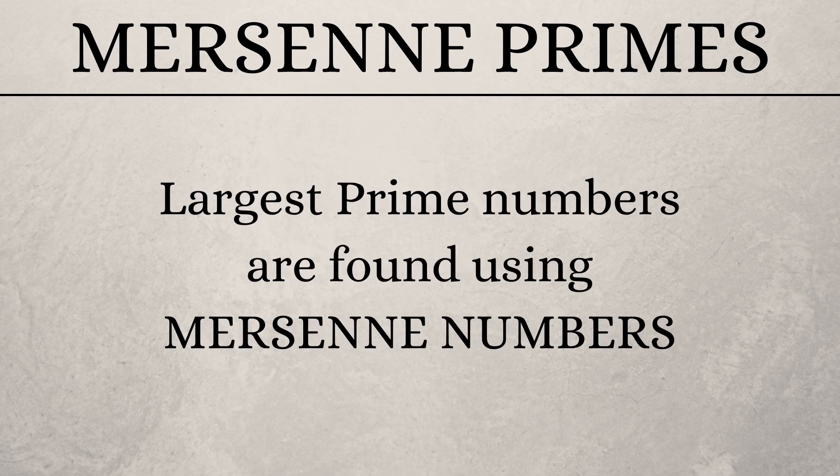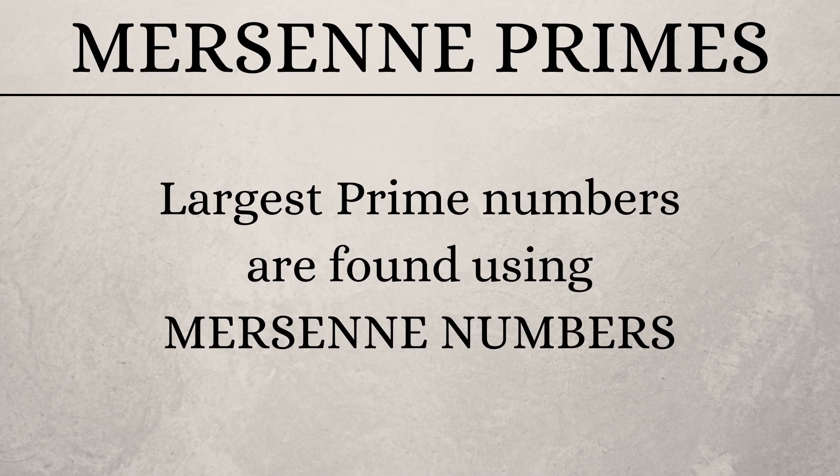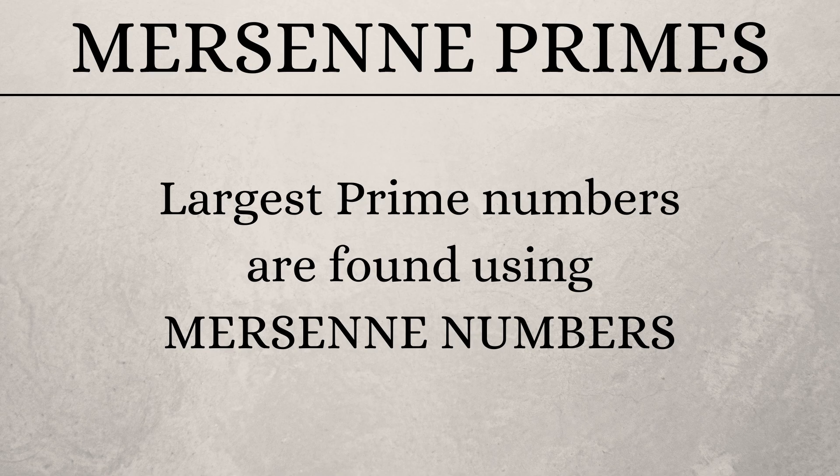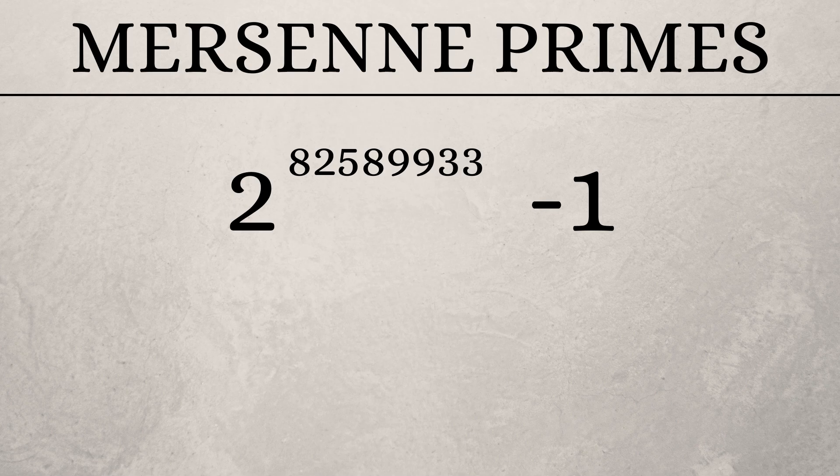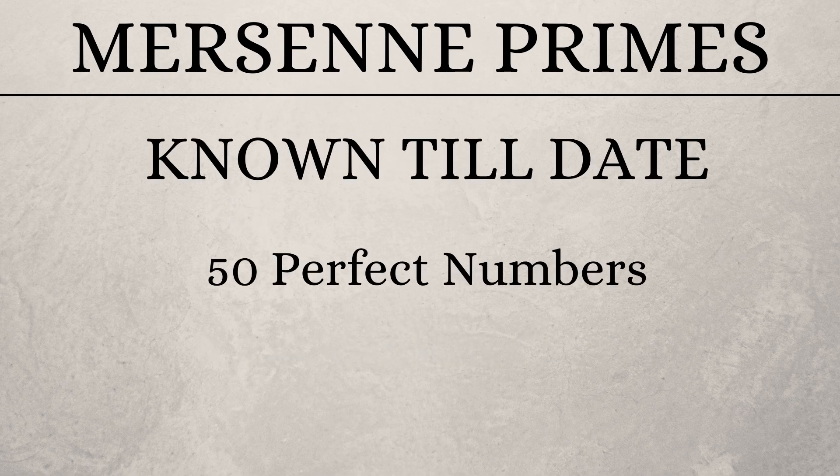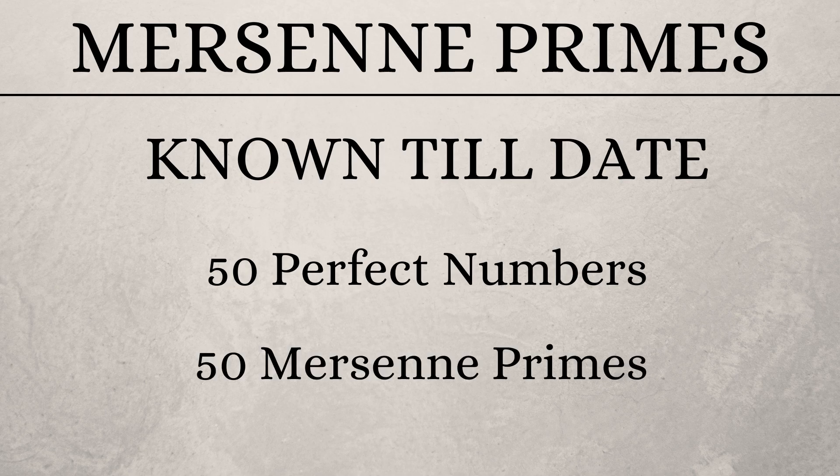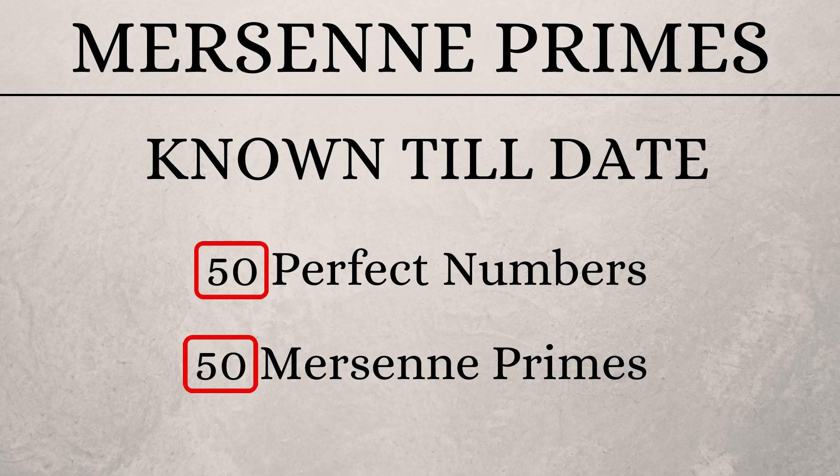But still, it's interesting to note that the largest prime numbers found till date were found using the same technique. And this largest Mersenne prime is written like this. And the exact number is said to have more than 24 million digits. Till date, mathematicians have found 50 perfect numbers and 50 Mersenne primes. This shows that there should be some relationship between Mersenne primes and perfect numbers.